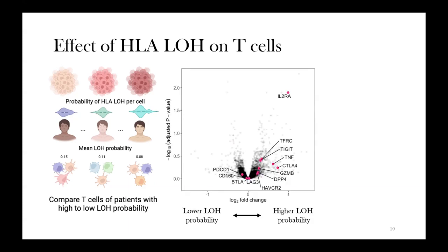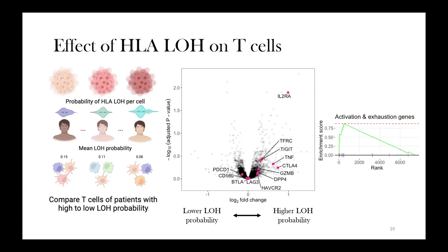I took the predicted probability of HLA-LOH for each individual cell, averaged these per patient, and then performed differential expression analysis on T cells comparing patients with high versus low mean HLA-LOH probability. The volcano plot shows that genes highlighted are mostly related to T cell activation and exhaustion, and most are upregulated. The p-values are somewhat limited because I only have a few samples, but the enrichment score shows a positive enrichment — more activated or exhausted T cell phenotypes in patients predicted to have undergone HLA-LOH. Future work will extend this across additional cohorts and all other cell type compartments to understand what effect HLA-LOH has on the surrounding tumor microenvironment network.